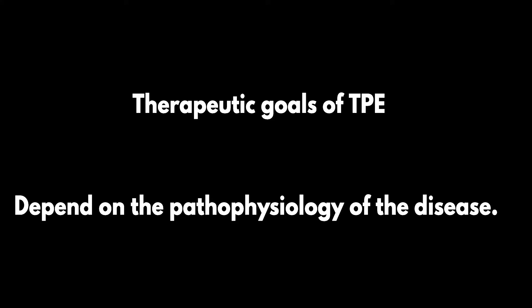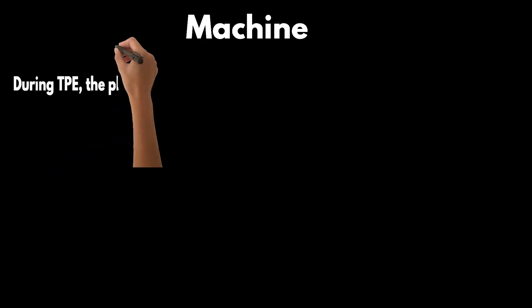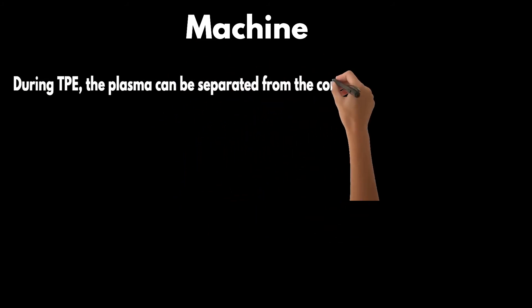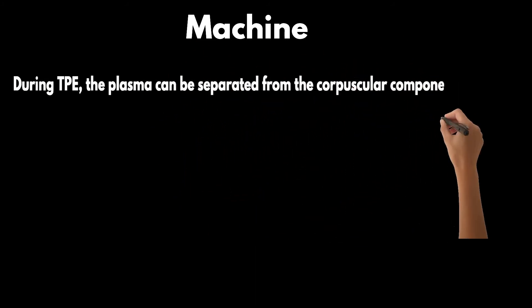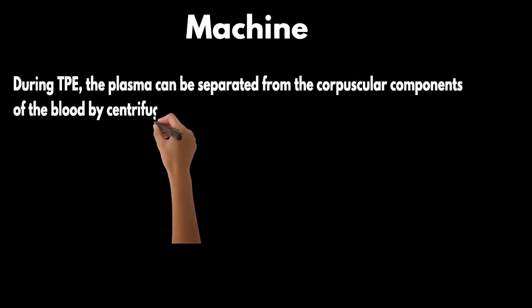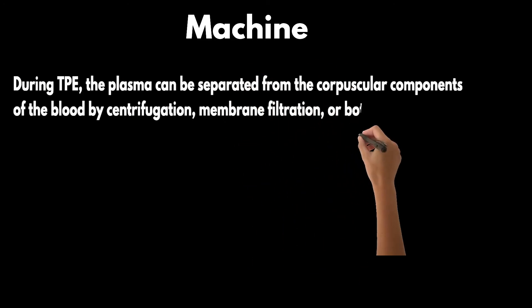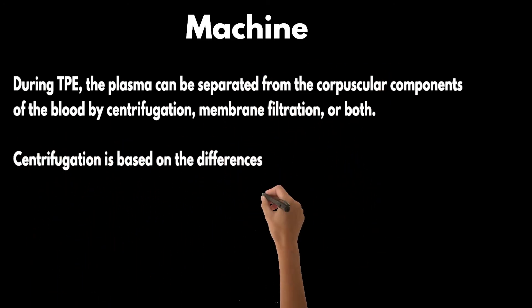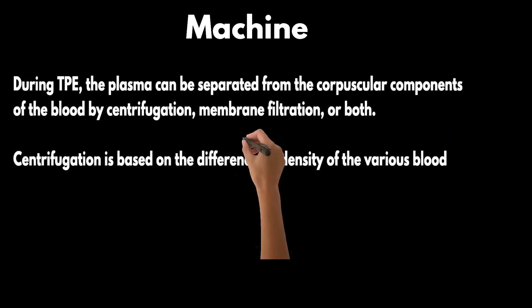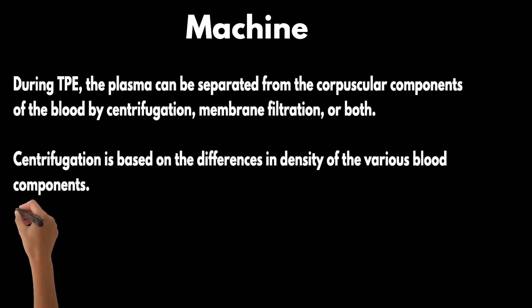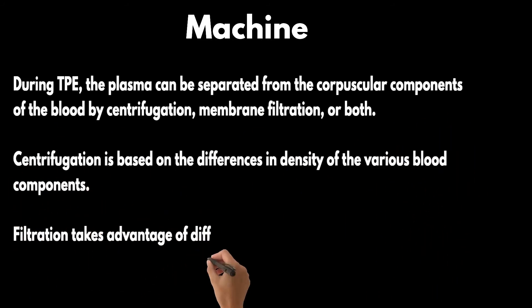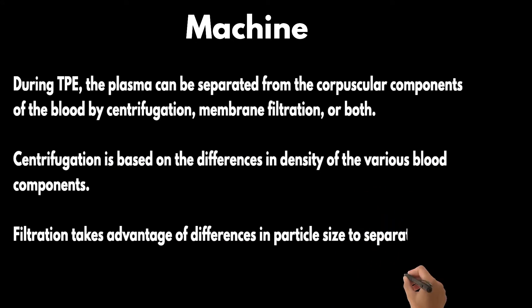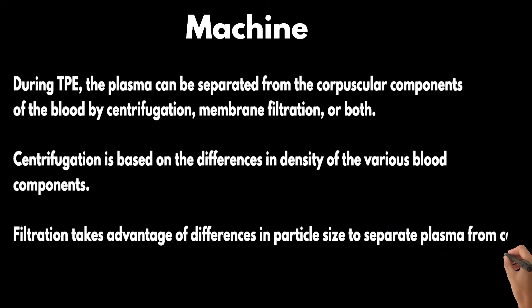Therapeutic goals of TPE will depend on the pathophysiology of the disease. During TPE, the plasma can be separated from the corpuscular components of the blood by centrifugation, membrane filtration, or both. Centrifugation is based on the differences in density of the various blood components. Filtration takes advantage of differences in particle size to separate plasma from cells.